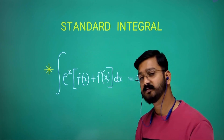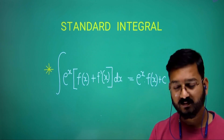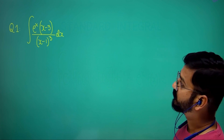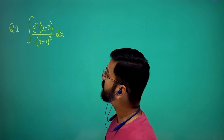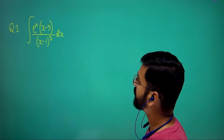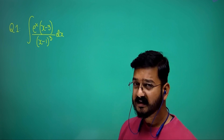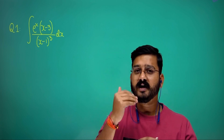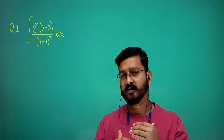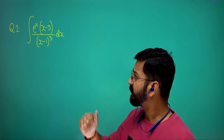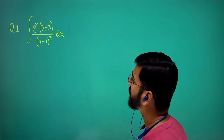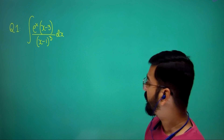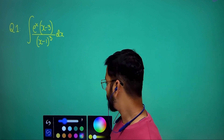Let's understand this concept through a few questions. Our first question is the integral of e to the power x multiplied by (x minus 3) divided by (x minus 1) cubed. In these kinds of questions, you need to express the numerator in terms of the denominator. Here, the numerator is x minus 3 and the denominator is x minus 1.